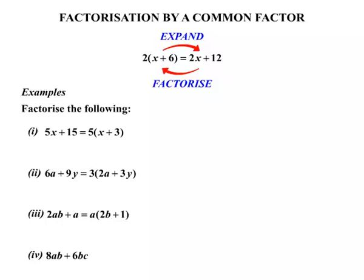Our fourth example: 8ab plus 6bc. Well, this time looking at the two terms, they both have a common number, a common factor. That would be 2.